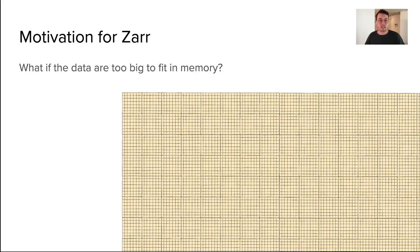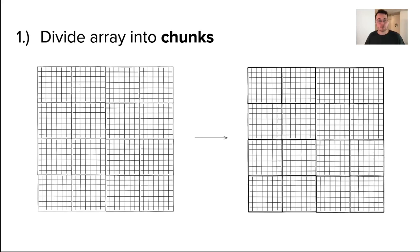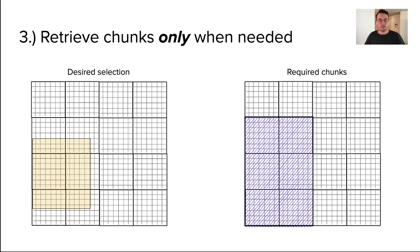Zarr divides larger arrays into smaller, evenly spaced chunks. Each chunk is compressed, and then only the particular chunks that correspond with the selection desired are read back into memory.